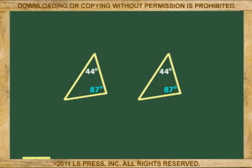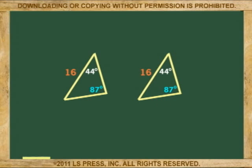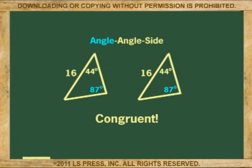If we determine that two pairs of corresponding angles are equal, and that any side to the side of any of the two angles, or the non-included side, are also equal, we can say that the triangles are congruent, without considering the other side or angle. This congruency is called angle-angle-side, or AAS for short.